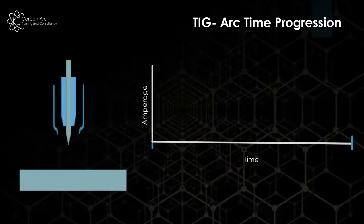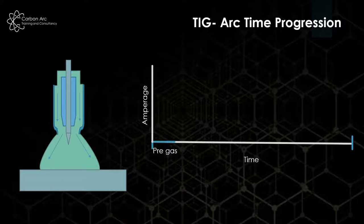When we start the arc, through the progression of pressing the button and the arc turning on, we go through different stages. The first is a pre-gas stage, normally set in seconds, which allows the shielding gas to flow so the area can be protected. We can remove the oxygen, nitrogen, and hydrogen away from where we're going to start the arc in the weld pool.